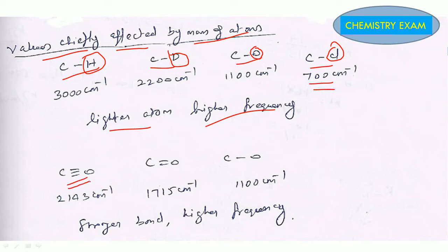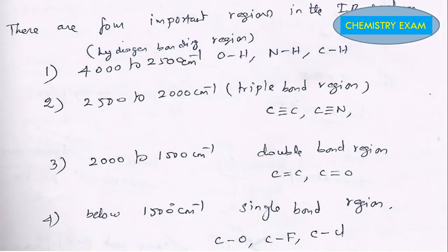And next, one more point we can remember: strong bonds like more strength means more frequency, less strength means less frequency. In other words, stronger bond, higher frequency.